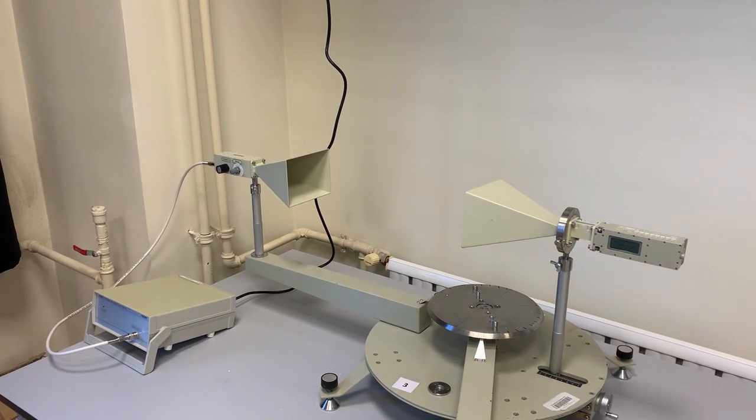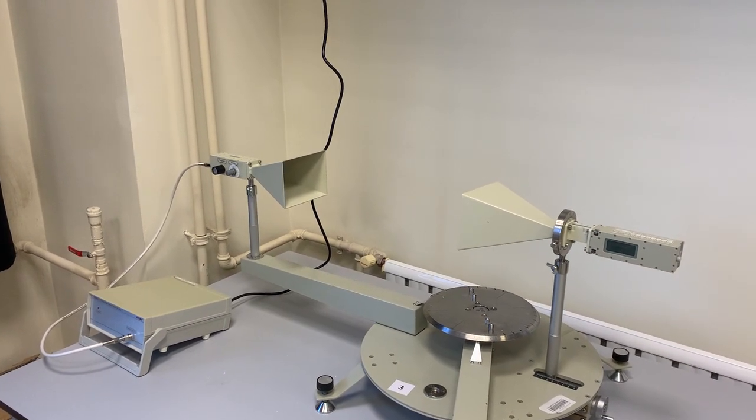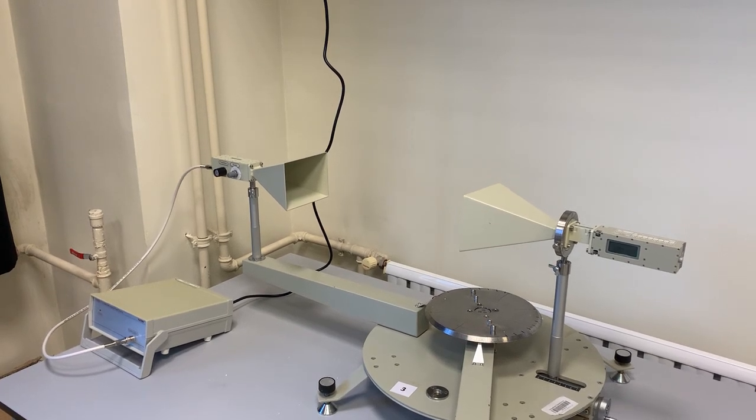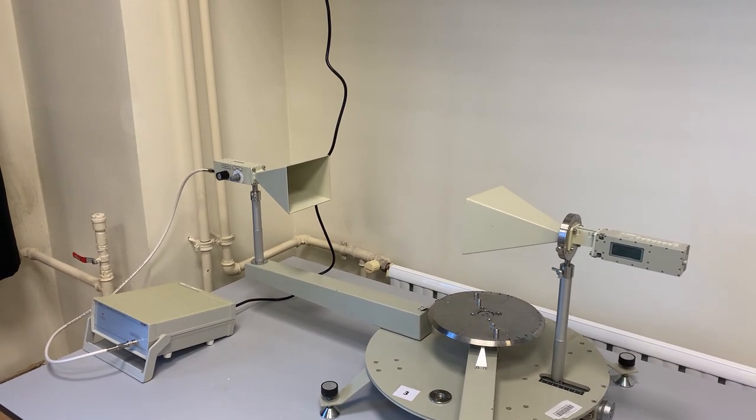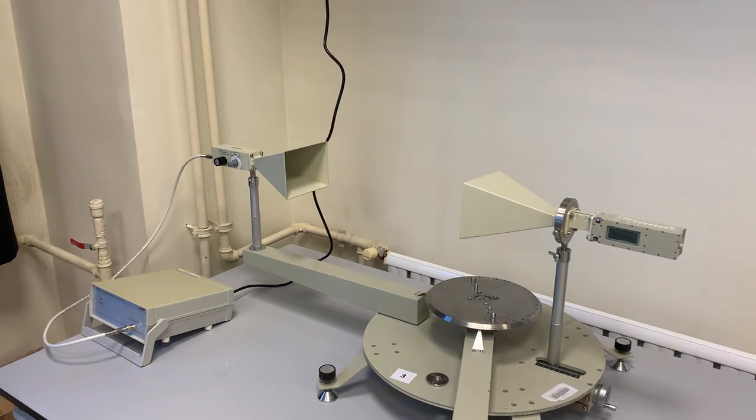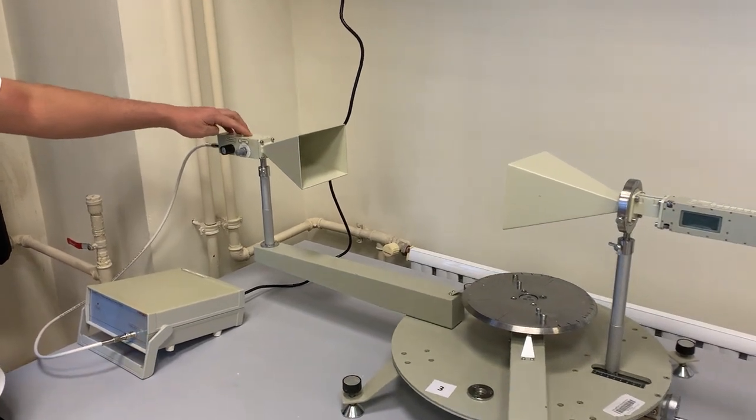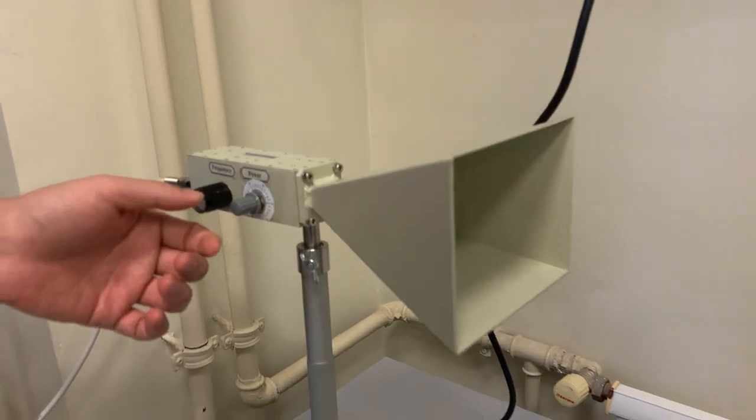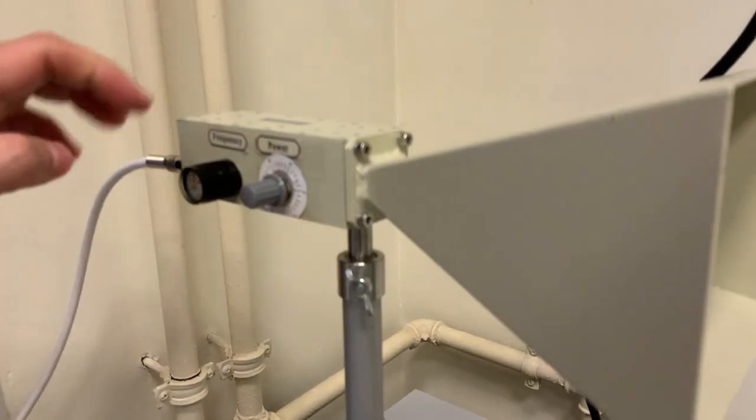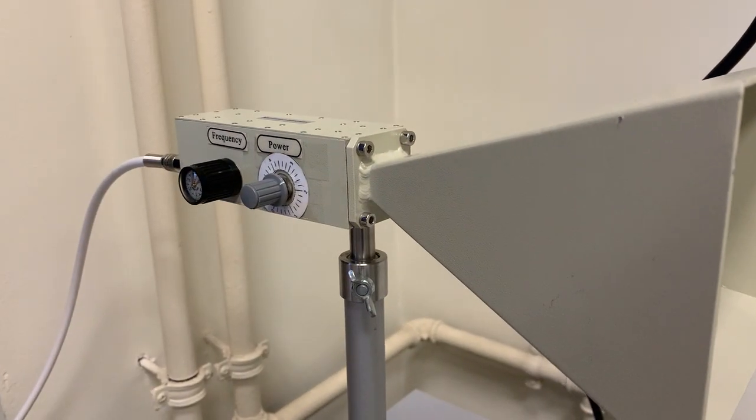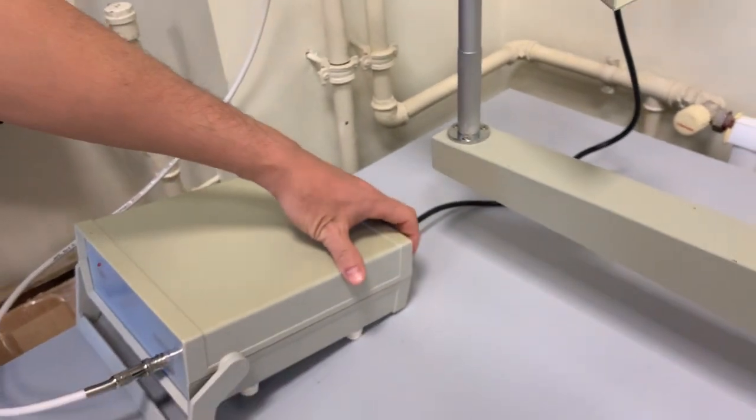In the microwave experiment, we're going to perform mainly three experiments. Here we have a transmitter where we can change two things: the frequency and the power. This transmitter is connected to the power supply, so when you turn it on, you can see that a red light comes on.